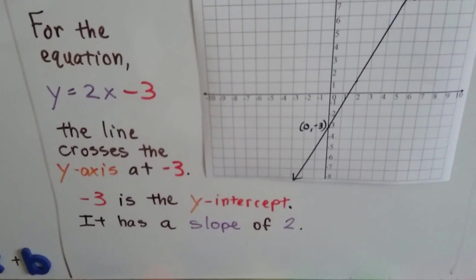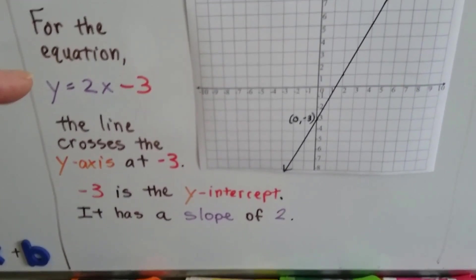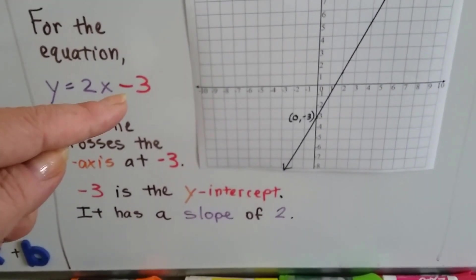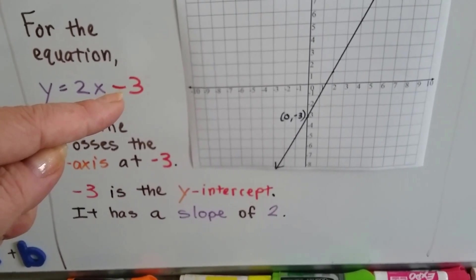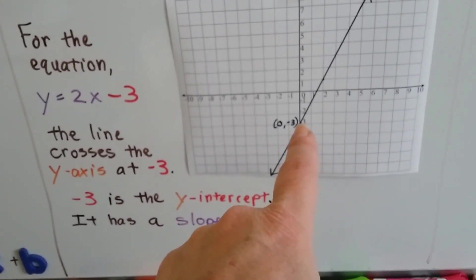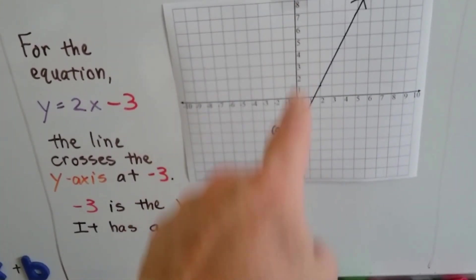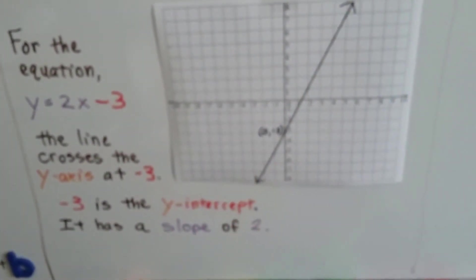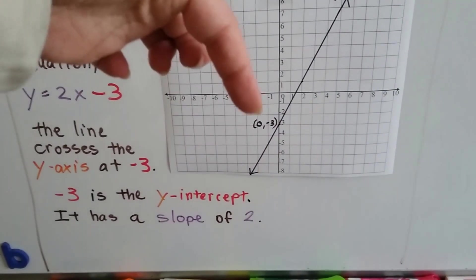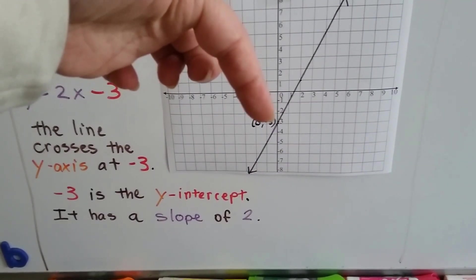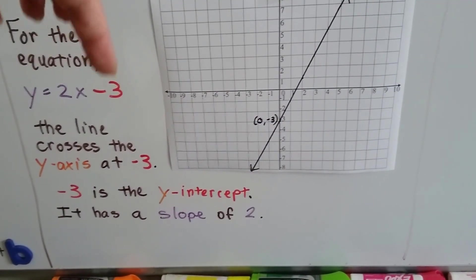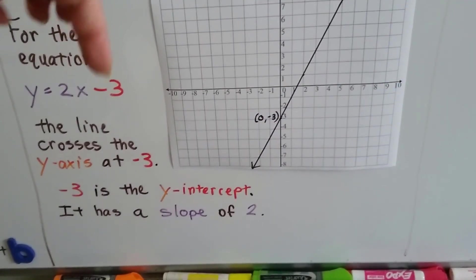For the equation y equals 2x minus 3, the y-intercept b is negative 3. That's where the line crosses the y-axis. Here's the y-axis. This line is crossing the y-axis at negative 3. That's the y-intercept b.